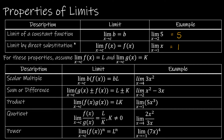The first property is scalar multiple: if you've got some constant that can be factored out of the function, it's okay to bring it to the front. For instance, I've got a 3 here, so I can take 3 times the limit as x approaches 4 of x squared. The limit of x squared as x approaches 4 is 16 by direct substitution, so it's 3 times 16, which is 48. You could also just direct substitute with the 3 included — you absolutely can, and sometimes it's helpful to factor that constant out, but it's not necessary.